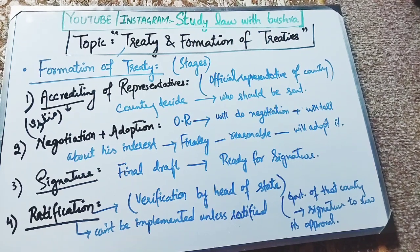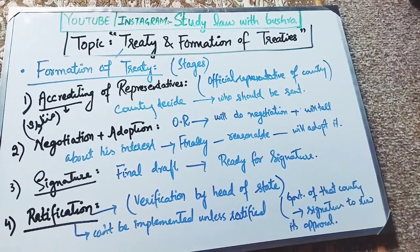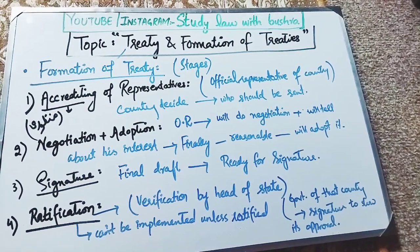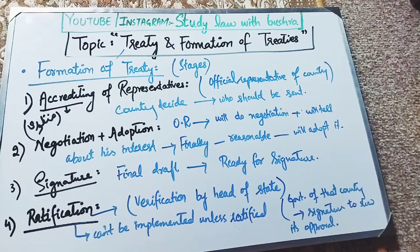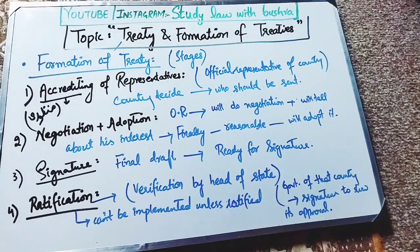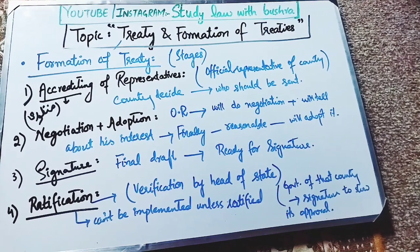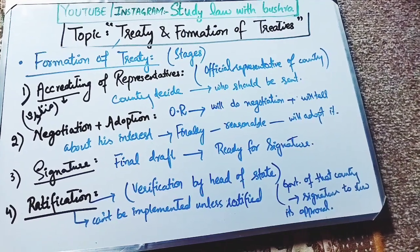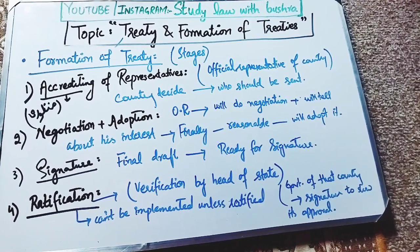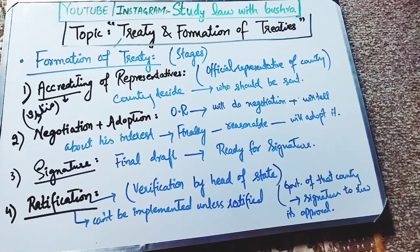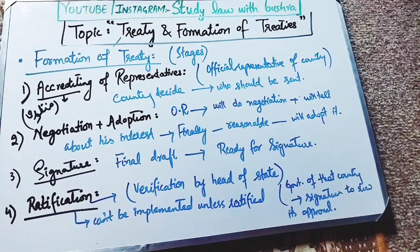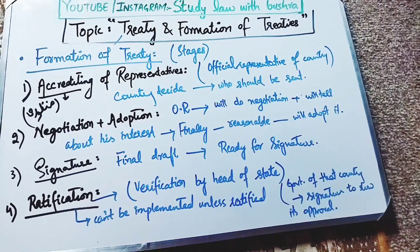The second stage is negotiation and adoption. Negotiation means to discuss and talk. The person whom the country has sent as its official representative will do the negotiation with the other countries regarding the treaty, and will present his own state's interests. Finally, if he finds that the terms are reasonable, he will then adopt them.